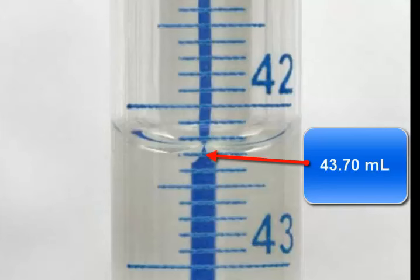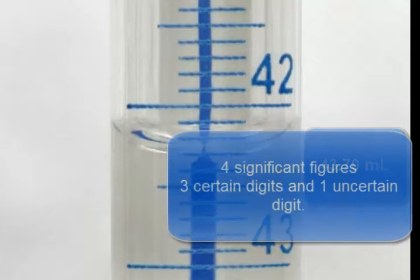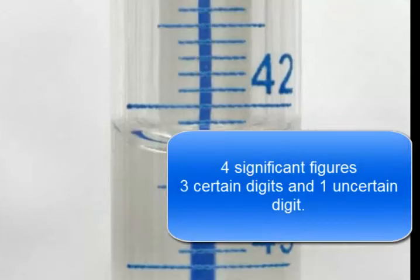My estimation of the bottom of the meniscus is that it lies right on the .7 line. I indicate this with my three certain digits, the 43.7, and my one uncertain digit, the zero behind the seven. The measurement would contain four significant digits.